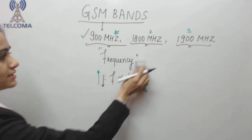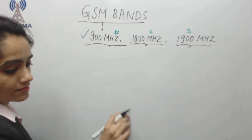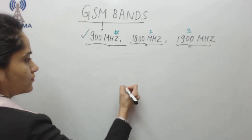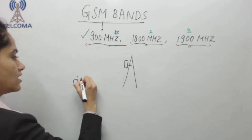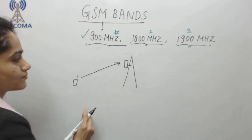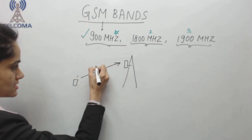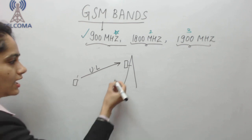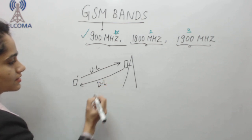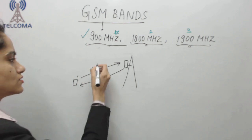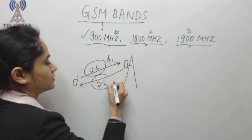Let's discuss the 900 megahertz band. When a user communicates with the network, that link is called the uplink. When the network communicates with the user, that link is called the downlink. We require a separate frequency for uplink and a separate frequency for downlink.